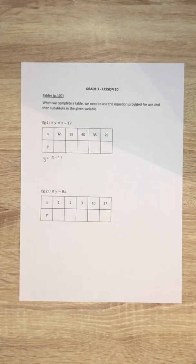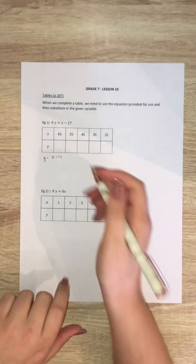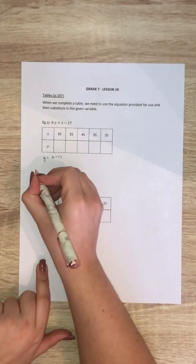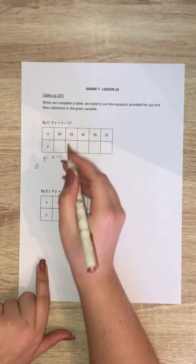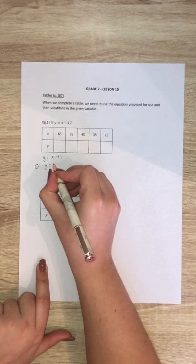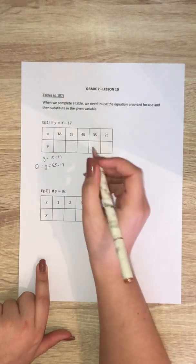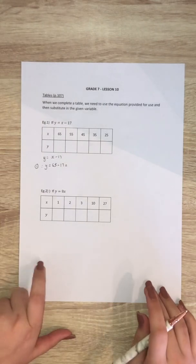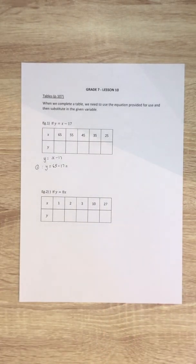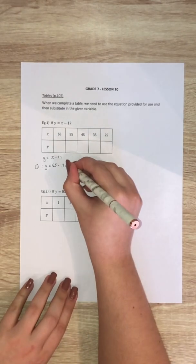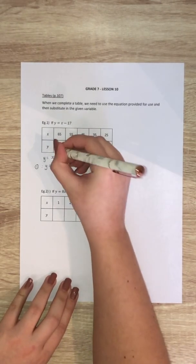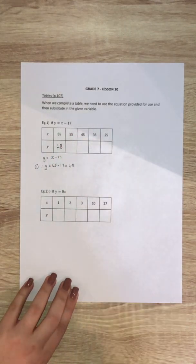So the first one my x value is 65. We are going to substitute in the value 65. For value 1, y is equal to my x value 65 minus 17. All we did was replace the x with that value. And 65 minus 17, so 65 minus 10 is 55 minus 7 is then 48. So my first number, the y value in the table, is 48.